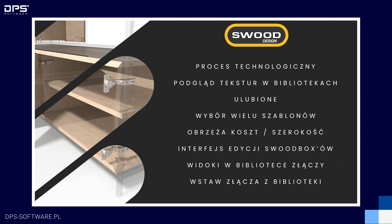W ramach nowości SWUT Design wprowadzono wiele bardzo przydatnych usprawnień. Omówimy po kolei nową bibliotekę SWUT, czyli procesy technologiczne, zmianę wyglądu biblioteki materiałów i obrzeży poprzez wprowadzenie podglądów tekstur, ulubione elementy biblioteki SWUT, dodanie opcji wyboru szablonu przy tworzeniu nowego projektu, wprowadzenie kosztu do tabeli szerokości obrzeży, duże zmiany w interfejsie edycji parametrów SWUT Boxów, widoki standardowe w edycji złączy oraz funkcję wstawiania złącza z biblioteki.